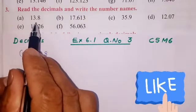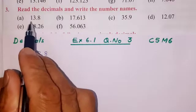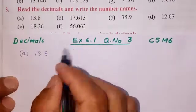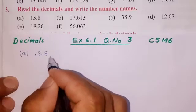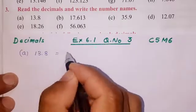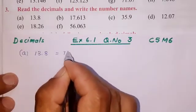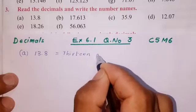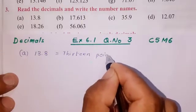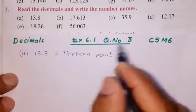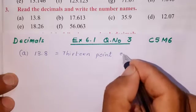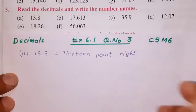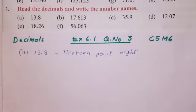Question A: 13.8. We can write the word: T-H-I-R-T-E-E-N, thirteen. E-I-G-H-T, eight.